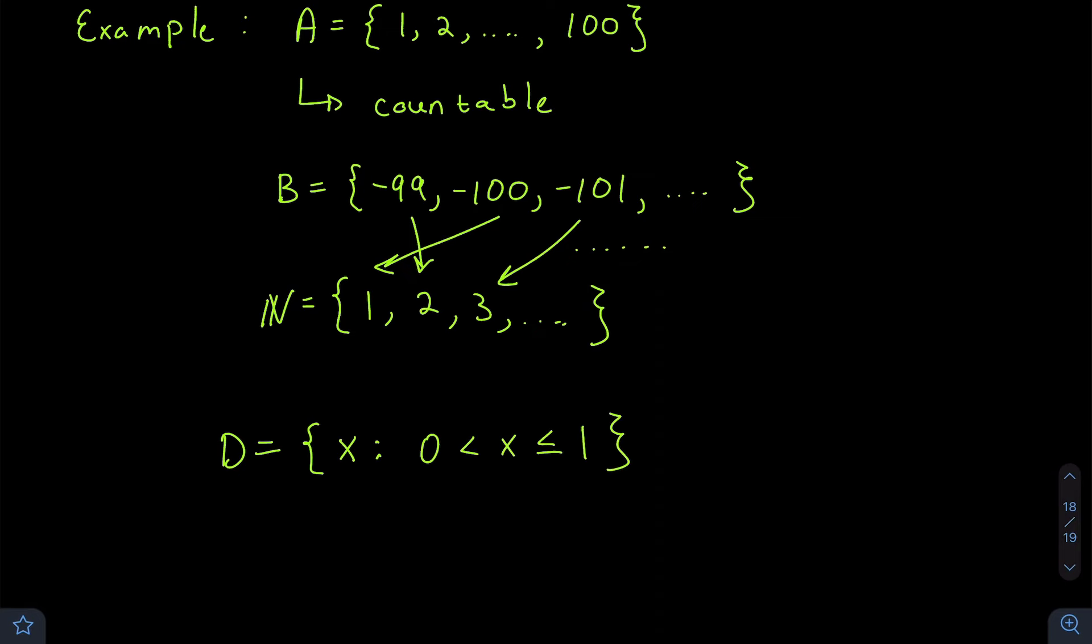We can rewrite this in set notation: D = {x: 0 < x ≤ 1}, where x is a real number. This set is not only infinite but it's not countable.